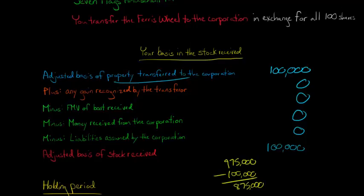You're selling stock, so this is going to be a capital gain. The question is: is this a long-term capital gain or a short-term capital gain? That matters because of the preferential tax treatment when netting capital gains and losses. Just take it on faith for now that it matters whether it's short-term or long-term for this $875,000 gain.